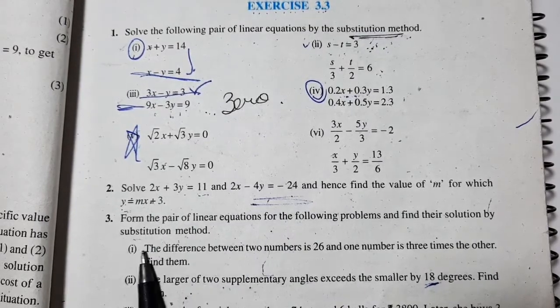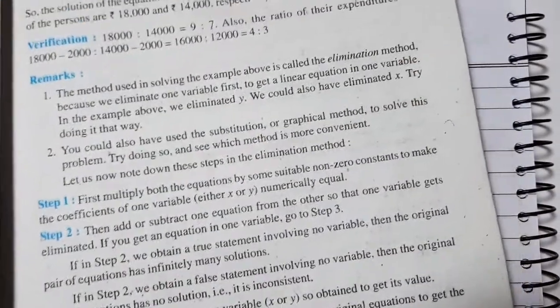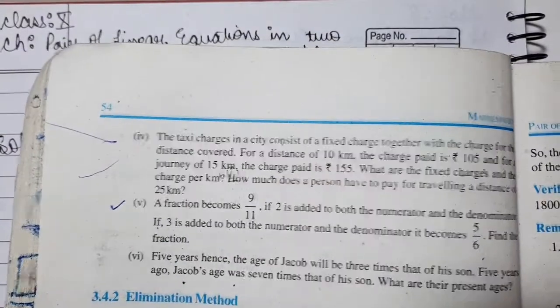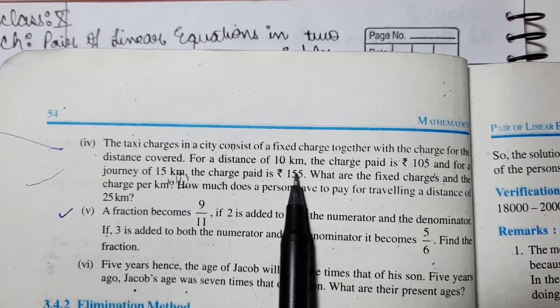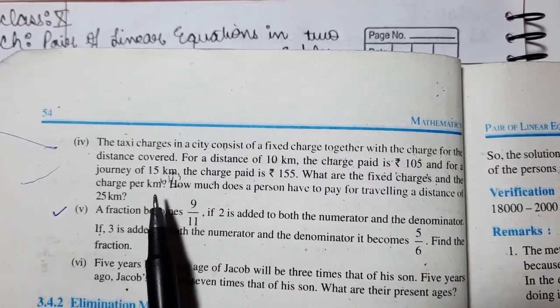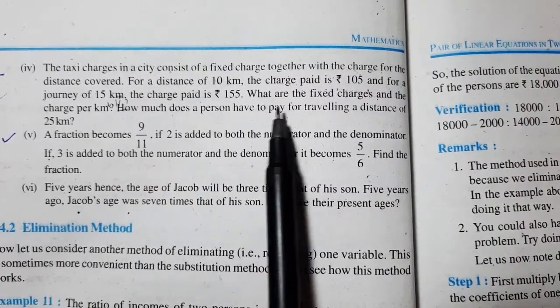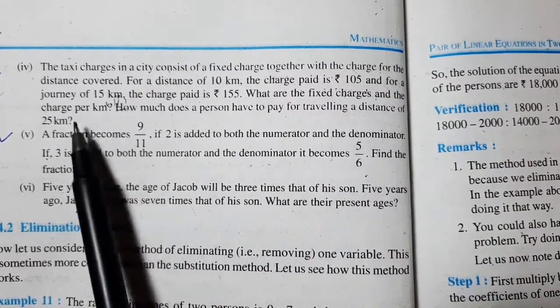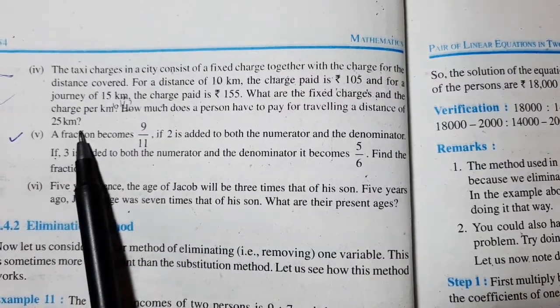Problem number 4: The taxi charges in a city consist of a fixed charge together with the charge for the distance covered. For a distance of 10 km the charge paid is Rs. 105, and for a journey of 15 km the charge paid is Rs. 155. What are the fixed charges and charge per kilometer? How much does a person have to pay for traveling a distance of 25 km?